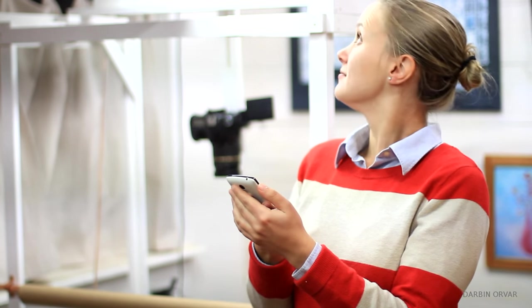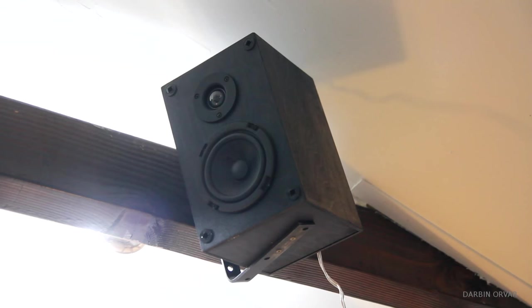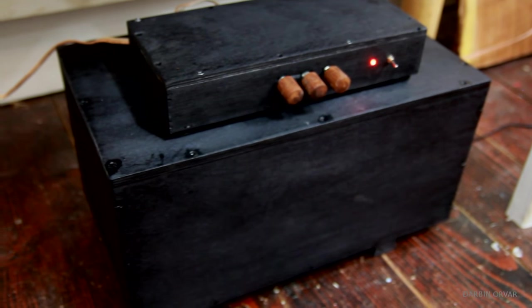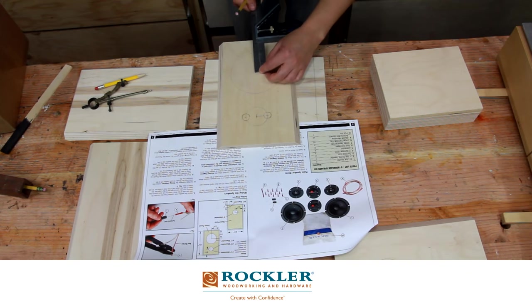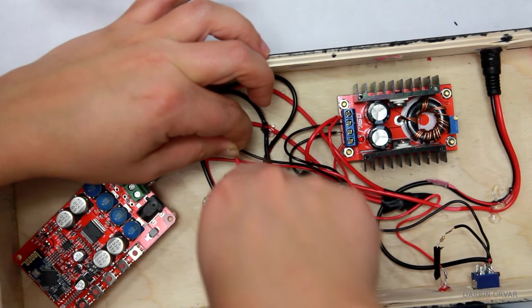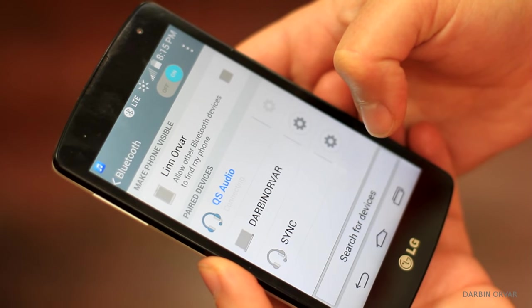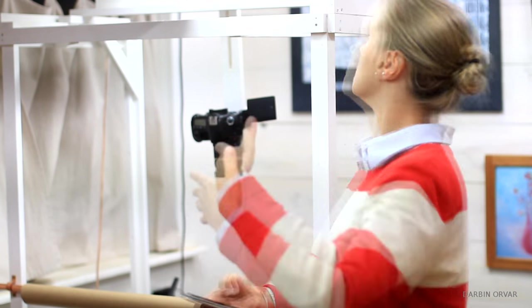In this video I'm going to show you how I created a bluetooth satellite speaker system using some speaker kits from Rockler, Baltic Birch, and a bluetooth amplifier board I ordered off the web. I'll put a link to everything I used for this build in the description.